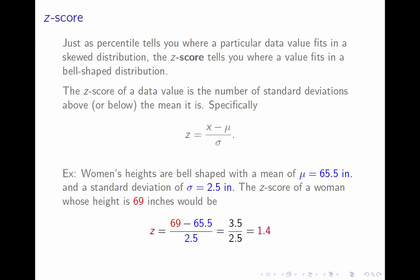But now, to scale that, to express it in units of standard deviation, we divide by the standard deviation. 3.5 divided by the standard deviation of 2.5 is 1.4. So, that tells us that this woman's height is 1.4 standard deviations above the mean.